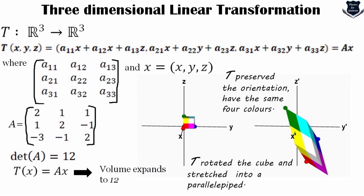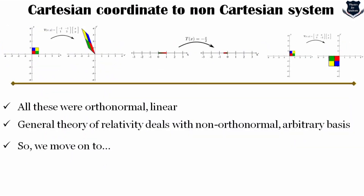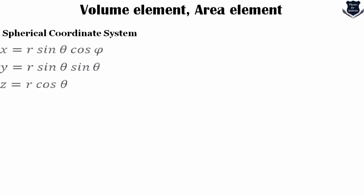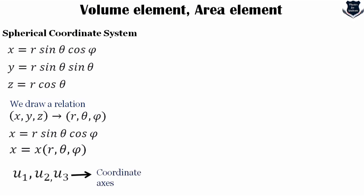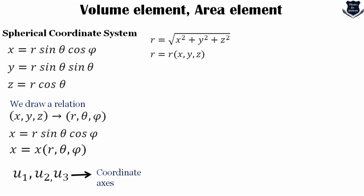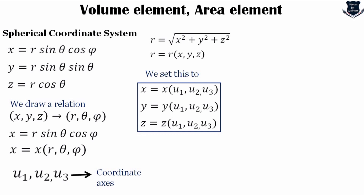We have measured orthonormal linear transformations — change in length, orientation, and change in volume. However, general relativity deals with non-orthonormal or arbitrary bases, so we must move on. Here is a spherical coordinate system. We draw a relation where x is a function of r, theta, and phi. Using u1, u2, u3 as coordinate axes, and r as a function of x, y, z — these are called transformation equations.